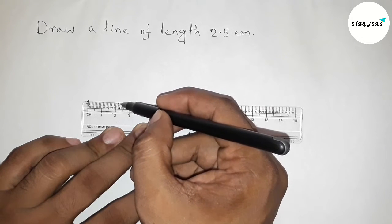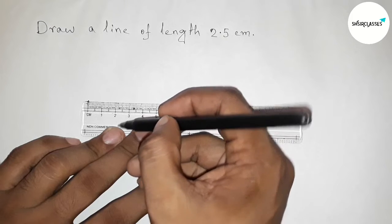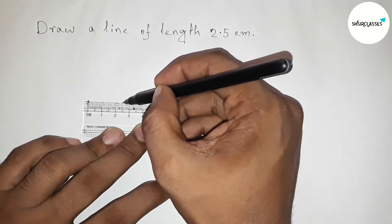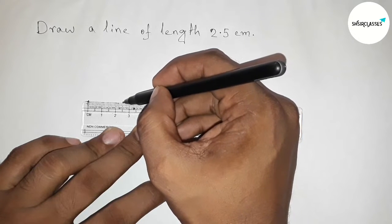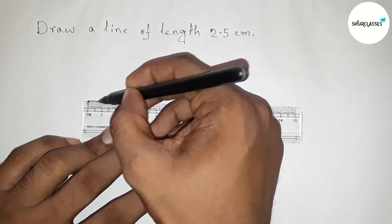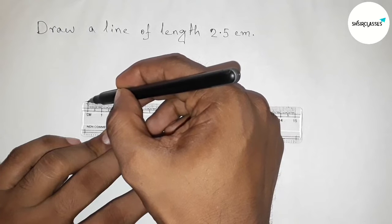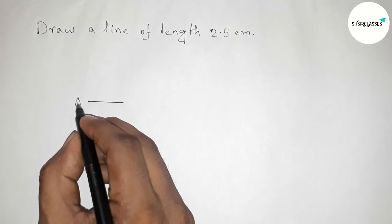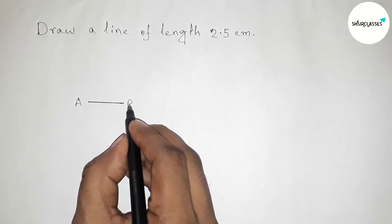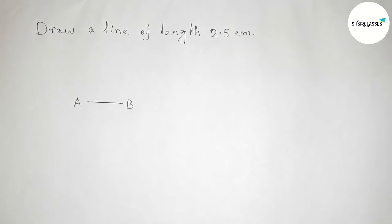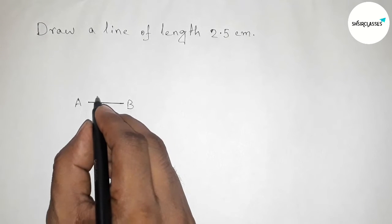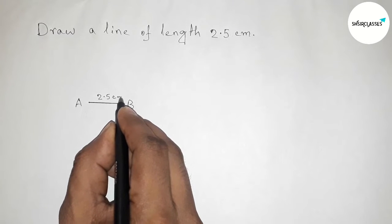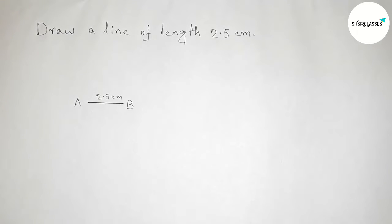So this is 2.5 centimeter length, so this is 2.5, and joining this line. Okay, now taking two points. So taking here point A and here B. So AB is a line of length 2.5 centimeter, okay.